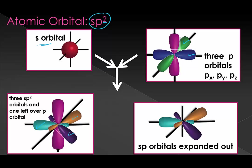Because we need to spread these out equal distances from each other, they're all going to be 120-degree angles from each other. We know that that's a trigonal planar geometry, or bent if one of them is a lone pair.